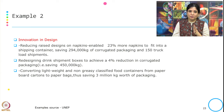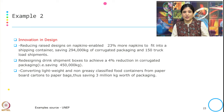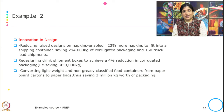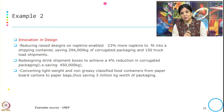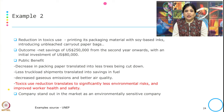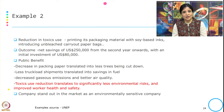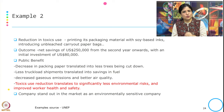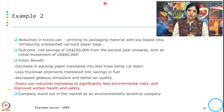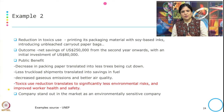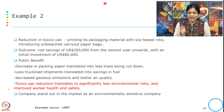They redesigned their drink shipment box to achieve a 4 percent reduction in corrugated packaging, saving a significant amount of kilograms. They also converted lightweight non-greasy food containers from paperboard cartons to paper bags, saving millions of kilograms worth of packaging. Additionally, they reduced toxic use by using soy-based ink for printing the packaging material and introduced unbleached carryout paper bags. The outcome was savings from the second year onwards with an initial investment of 80,000 US dollars.